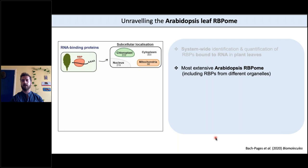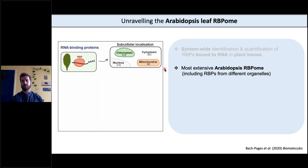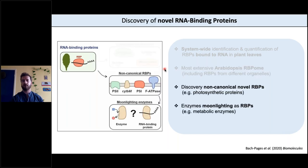We can use PETRIC to comprehensively identify the RNA binding proteins bound to RNA at a certain moment, and we have optimized this for plant leaves, which is particularly relevant for studying plant immunity. By doing that we have identified the most extensive RNA binding proteome in plant leaves, including RBPs from many different compartments including chloroplasts and mitochondria that were previously underrepresented. About 75% of these RNA binding proteins were already annotated as involved in RNA biology, but about 25% had no previous links to RNA biology — so they represent novel non-canonical RNA binding proteins.